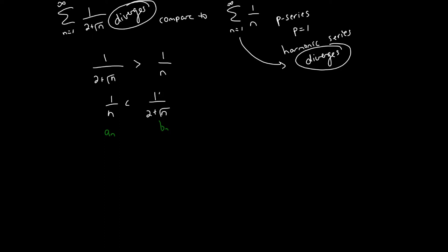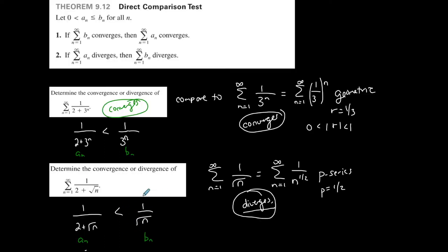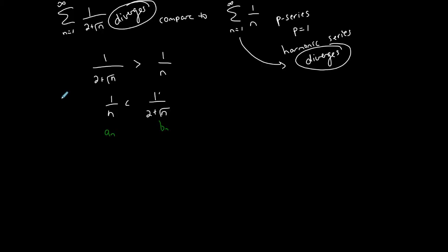This was a good illustration: I initially used a series that wouldn't tell me what I needed from the direct comparison test. So I picked another series to compare it to. The series I chose was smaller, and since the smaller series diverges, I now know for sure that my larger series diverges.